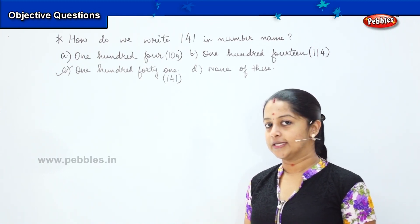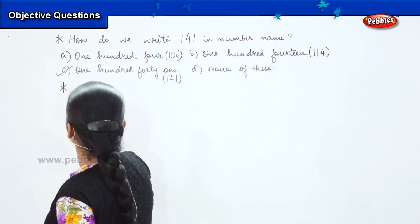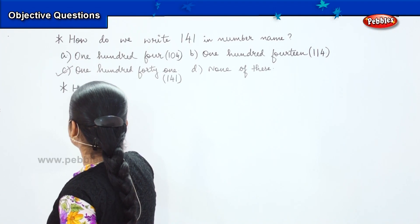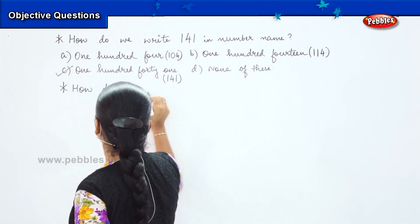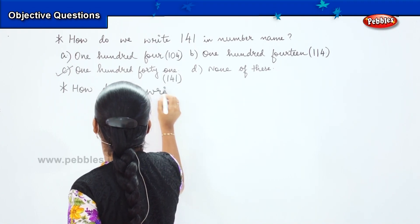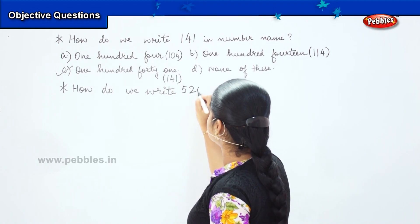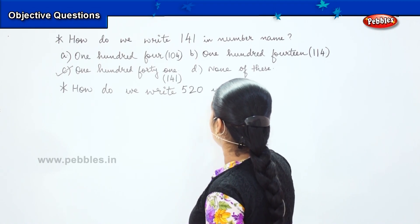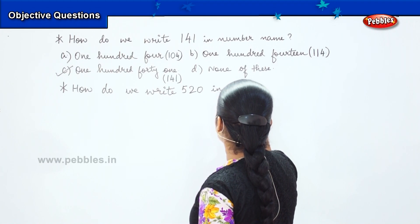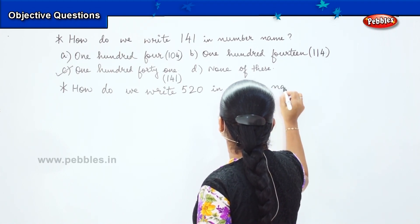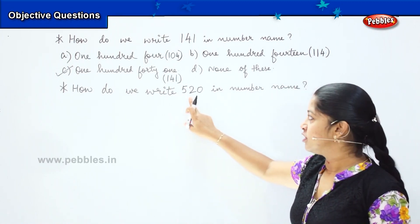Are you clear? Shall we move to the next question? Here is my second question: how do we write 520 in number name? You need to find the number name for the digit 520.